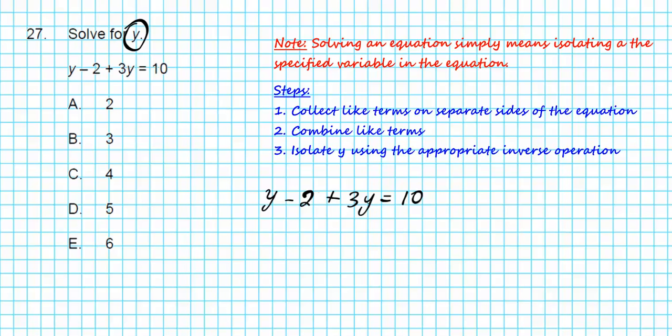If you notice in this equation, we have one constant on the right, that's good. On the left, we have variables and a constant. We need to get this constant over here so we have the constants on the right side and then the variable terms in terms of Y on the left. To accomplish that, we'll add 2 to both sides of the equation. That results in Y plus 3Y equals 10 plus 2. Notice I've collected all the variables in terms of Y to the left and the constants on the right.